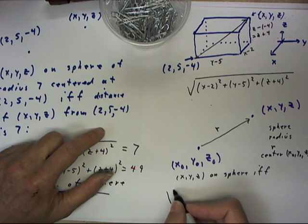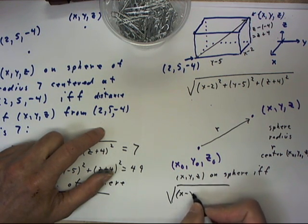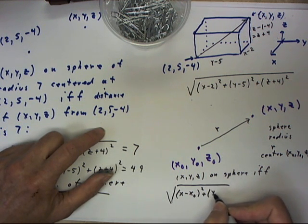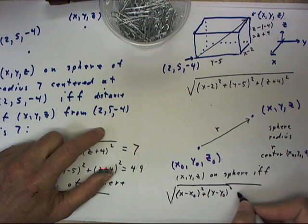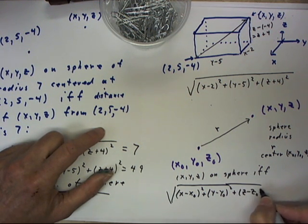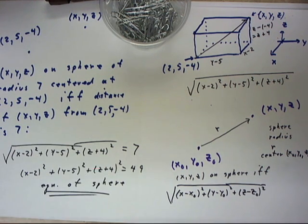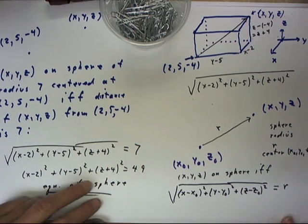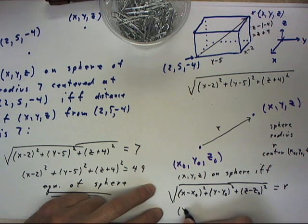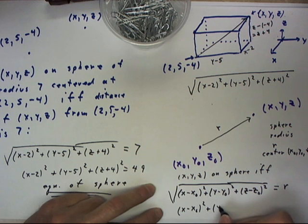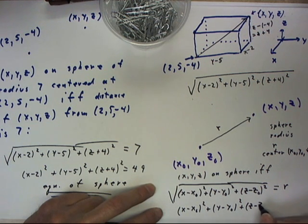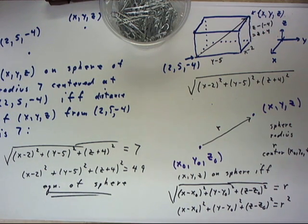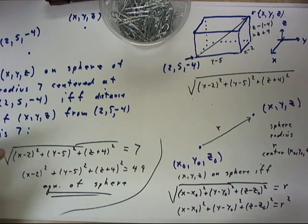The distance we know to be the square root of x minus x0 squared plus y minus y0 squared plus z minus z0 squared. And that distance should equal R. If we square both sides, we get the equation x minus x0 squared plus y minus y0 squared plus z minus z0 squared equals R squared. And we call this the equation of the sphere.